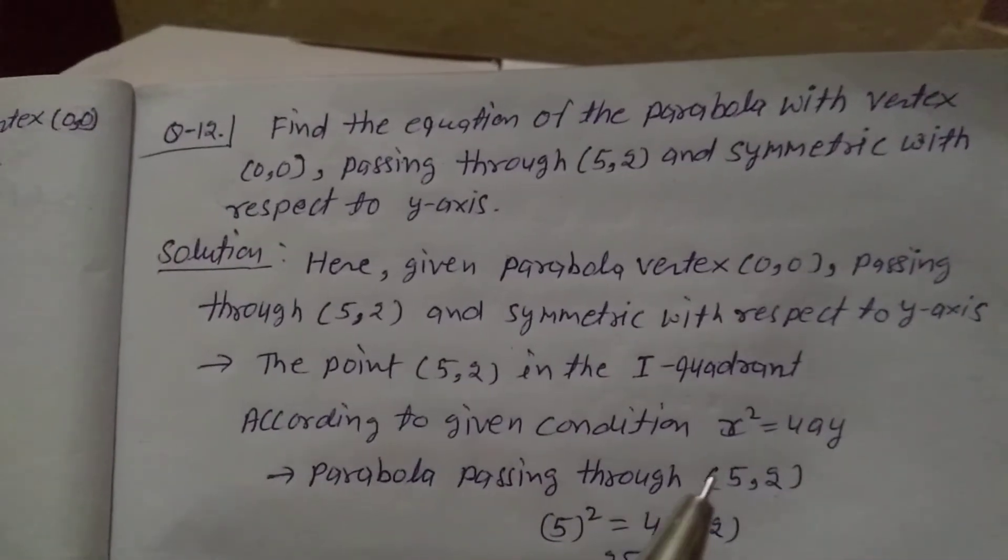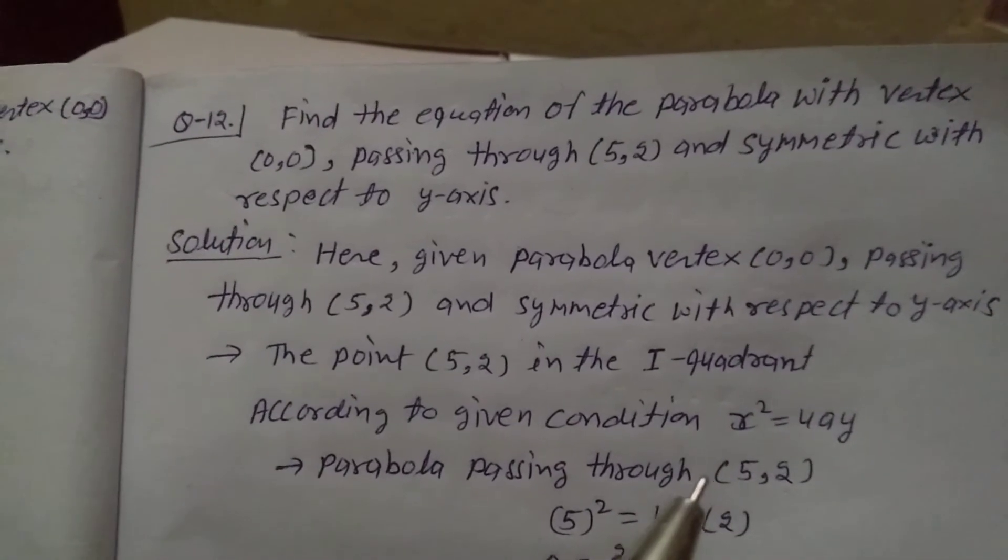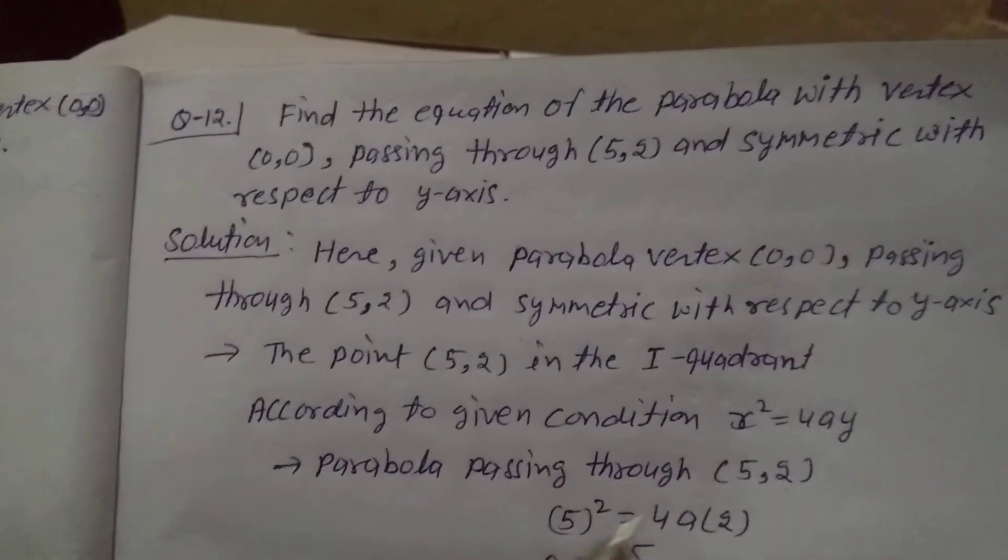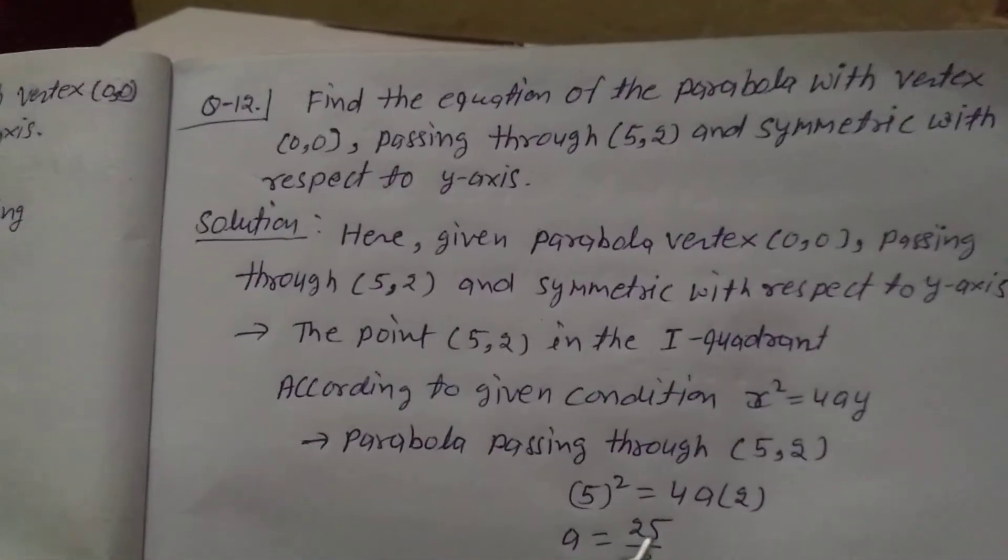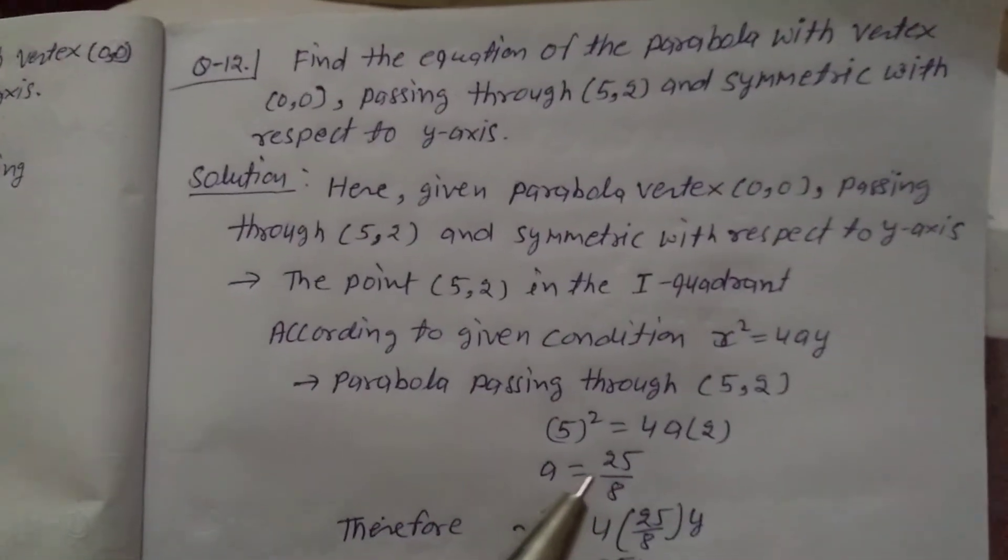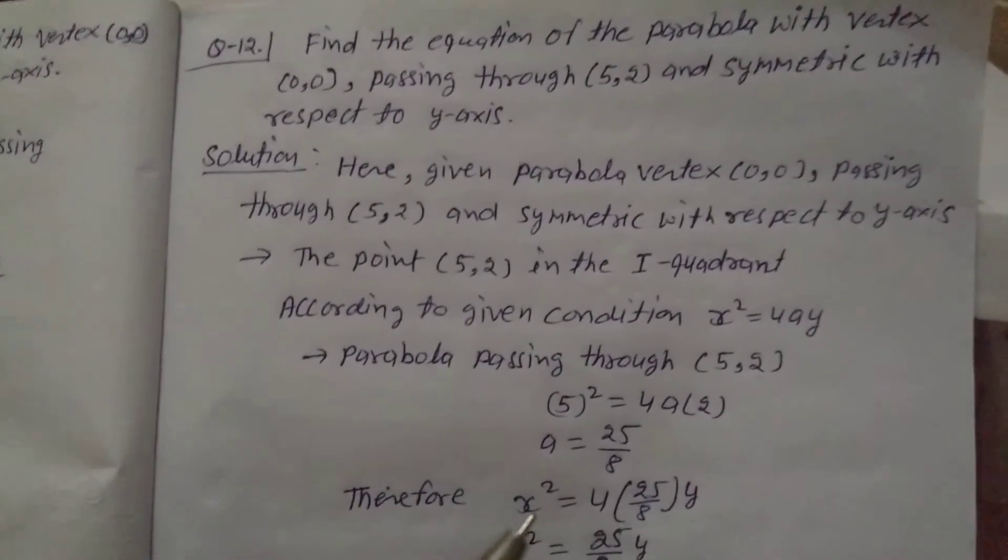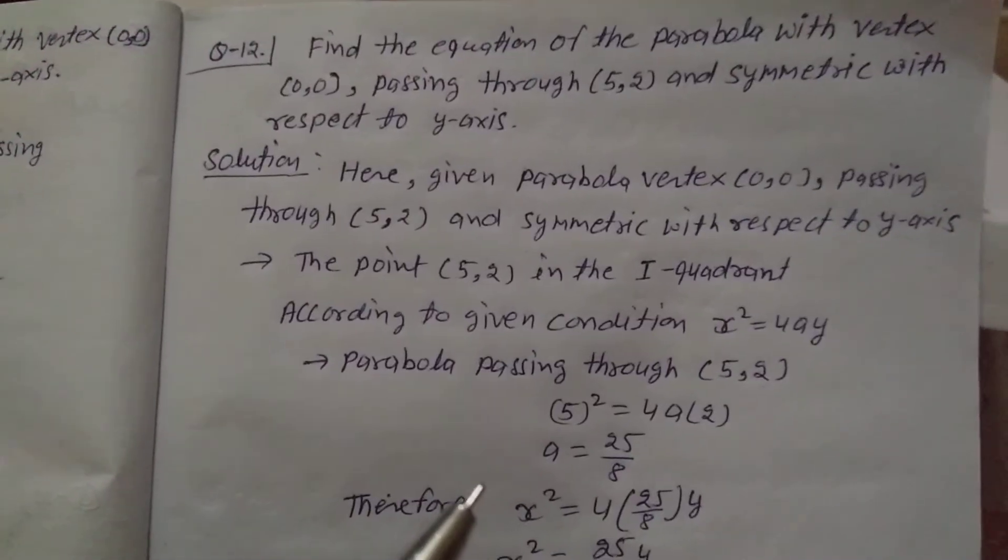Parabola passing through (5,2), so put the value of y and x at this point. So, 5 square equals 4a bracket 2. So, a equals 25 by 8. Now put the a value in the parabola equation.